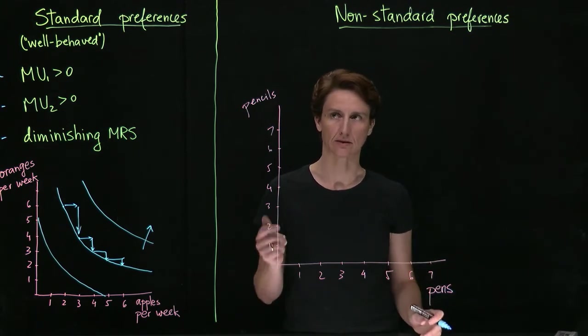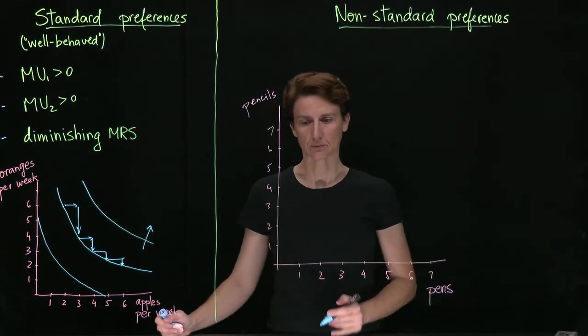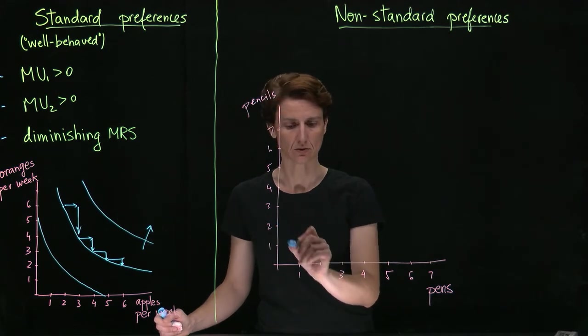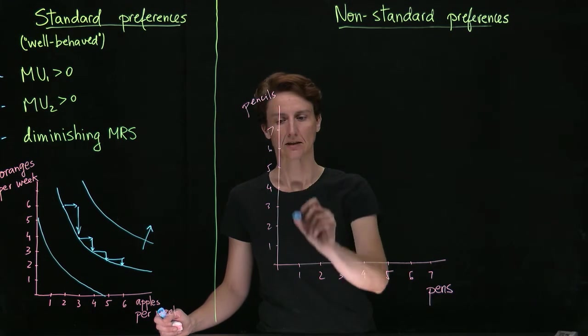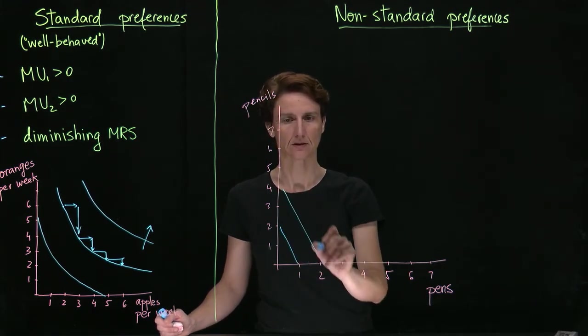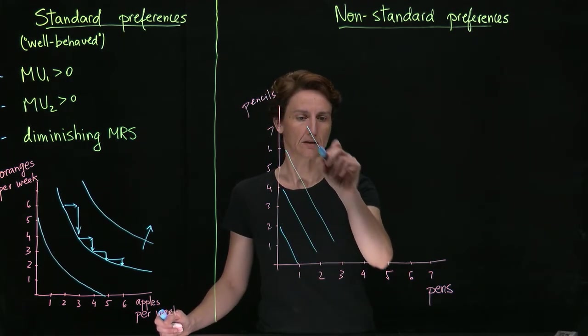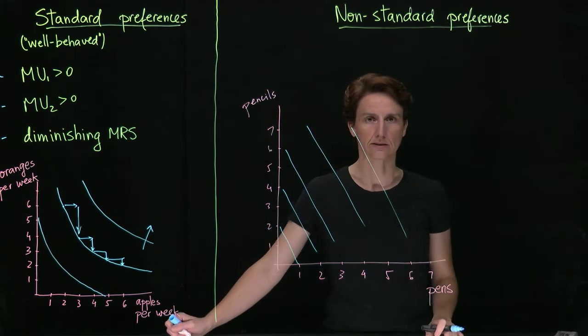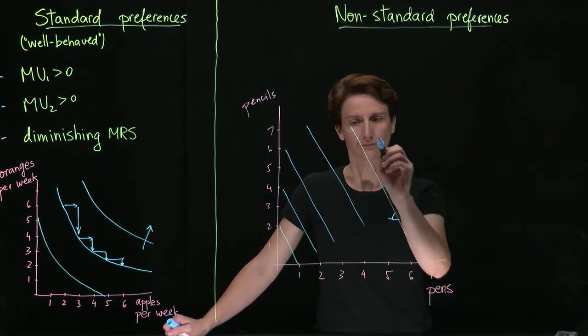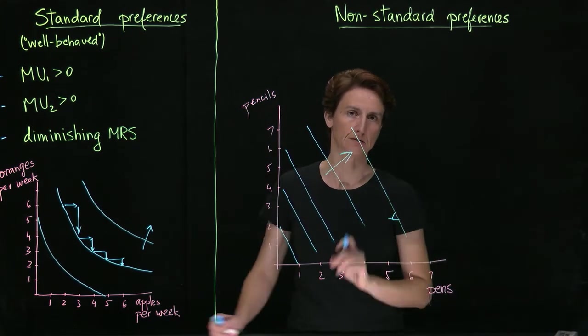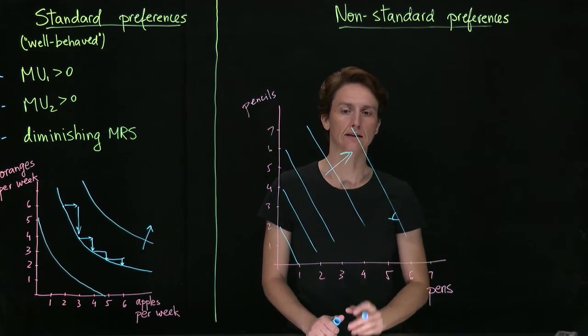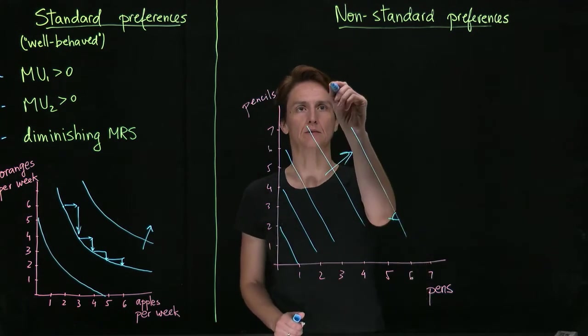Suppose that a pen lasts twice as long as a pencil and they'll be willing to trade two pencils for one pen or four pencils for two pens. So in that case, indifference curves will have a constant slope indicating utility increases this way, indicating that the marginal rate of substitution is constant. This would be the perfect substitutes.